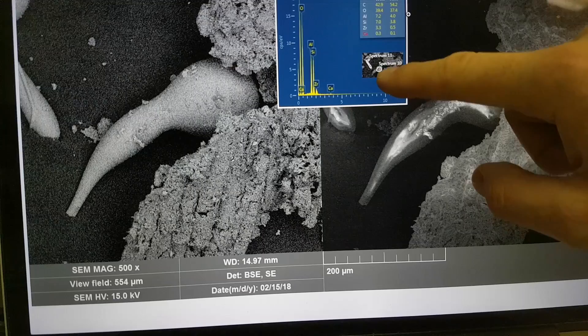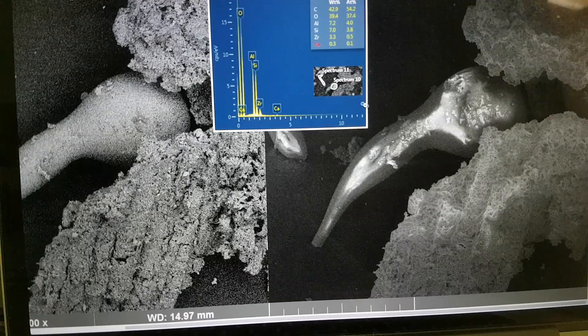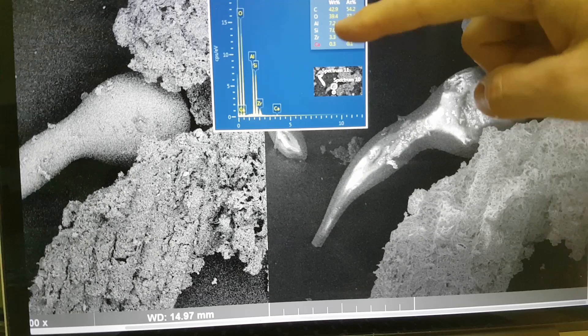So if I zoom into this, you can see, again, we have elements that we know we should have in the reactor, carbon, oxygen, aluminium, silicon, but there is this zirconium again. So where is this zirconium coming from?